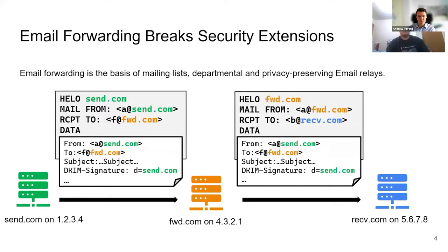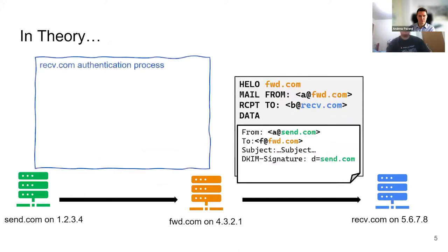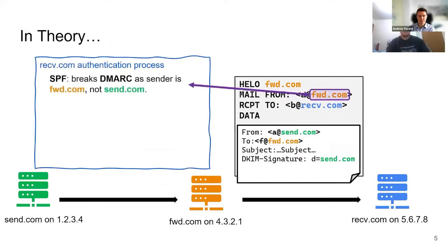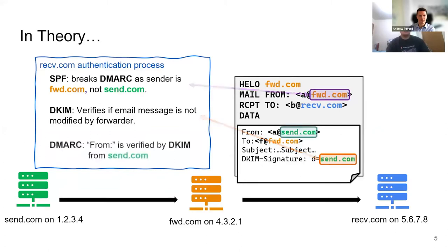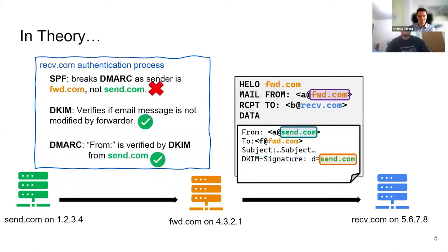As we demonstrated, forwarder.com should be able to authenticate the original sender just fine. But what about the final receiver? With SPF alone, it will still be a pass — however, this time it's forwarder.com that passed, not send.com. Therefore, the result from SPF can no longer help with the DMARC decision. But we still have DKIM here. DKIM can be verified as the forwarder did not change anything in the email message. With the DKIM result, DMARC can conclude that the FROM is authenticated as real send.com. So DMARC still works as long as DKIM is still working.